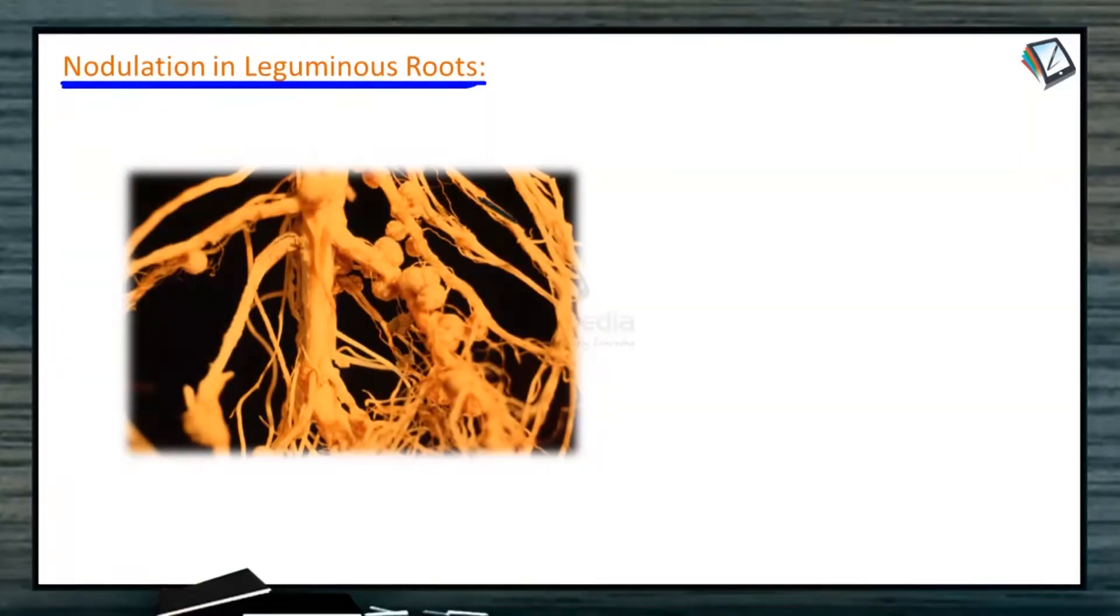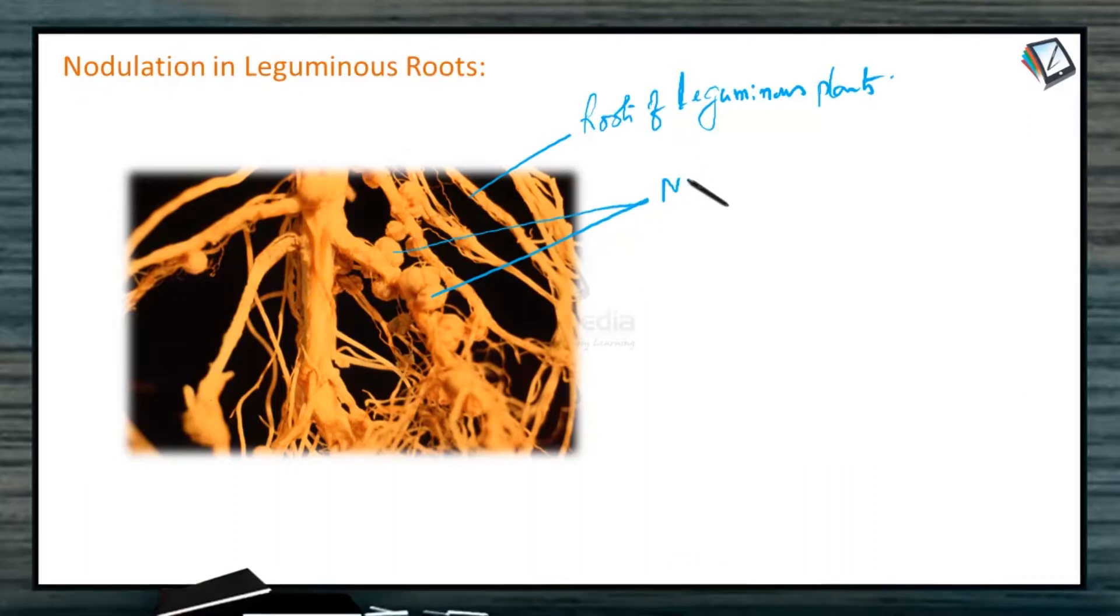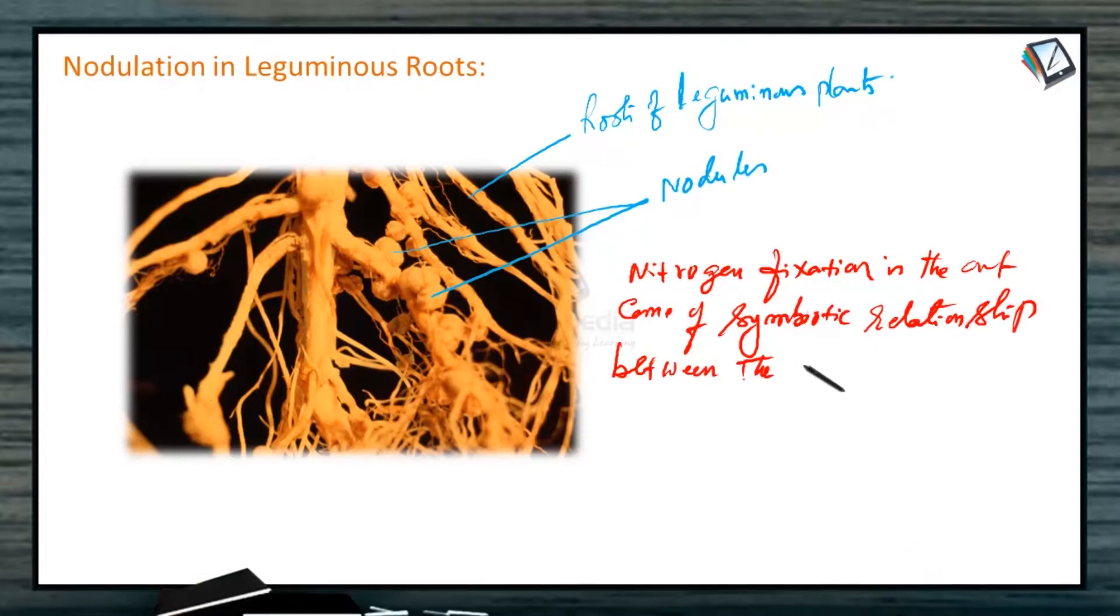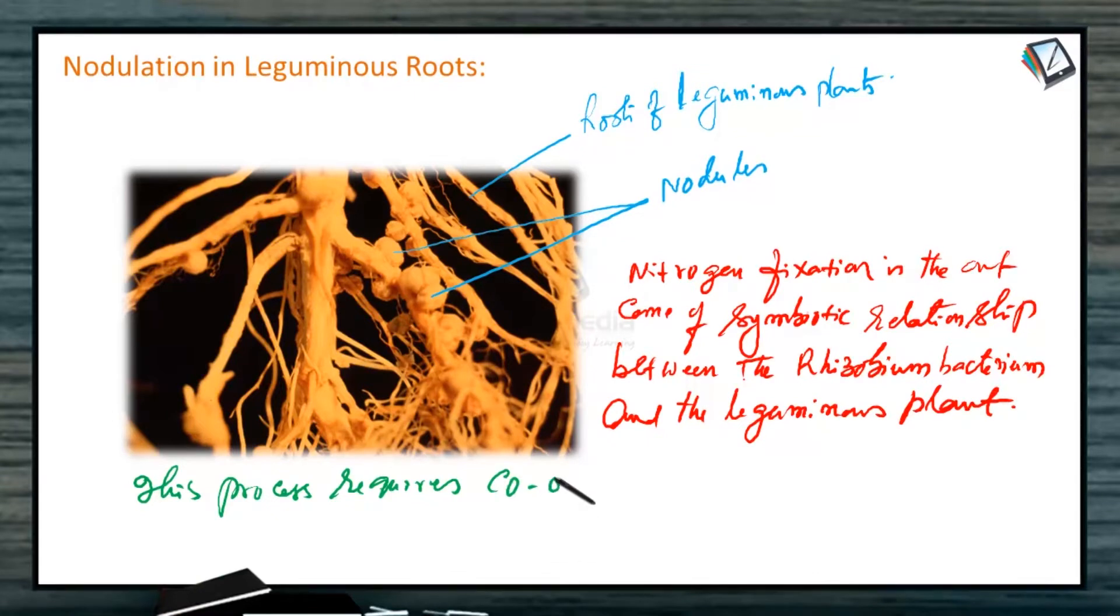Nodulation in leguminous roots. These are the roots of leguminous plants and these are the nodules. Nitrogen fixation is the outcome of symbiotic relationship between the rhizobium bacterium and the leguminous plant. This process requires cooperation of nod genes of legumes, nod, nip and fix genes cluster of bacteria.